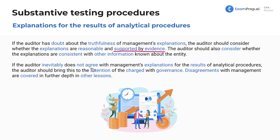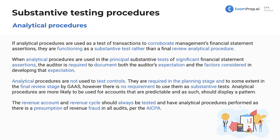If the auditor does not agree with management's explanations for the results of analytical procedures — for example, expenses dropped by twenty percent and management says they just cut costs, but nothing in the business actually changed — the auditor should bring this to the attention of those charged with governance, because management could be trying to understate their expenses. Disagreements with management are covered in depth in other lessons on communication and engagement conclusions, and at the end there's always the option of giving a qualified opinion.